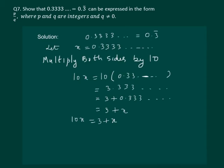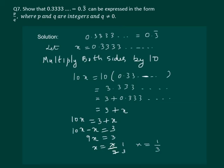Now let us solve the linear equation. We will get 10x minus x equal to 3, so 9x is equal to 3, which gives us x equal to 3 by 9, which gives us x equal to 1 by 3. So we have learned to write a non-terminating recurring number as a rational number.